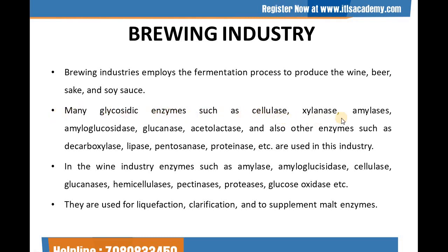Many glycosidic enzymes such as cellulase, xylanase, amylases, amyloglucosidase, glucanase, acetolactase, and also other enzymes such as decarboxylase, lipase, pentosanase, proteinases, etc. are used in this industry. In the wine industry, enzymes such as amylase, amyloglucosidase, cellulase, glucanases, hemicellulases, pectinases, proteases, glucose oxidase, etc. are used. They are used for liquefaction, clarification, and to supplement malt enzymes.